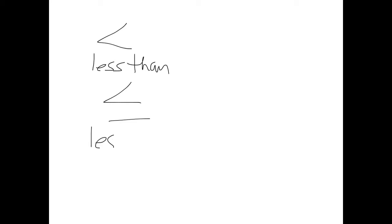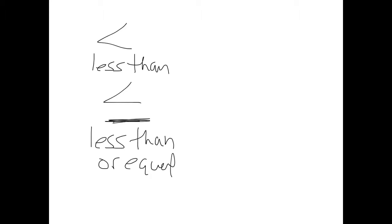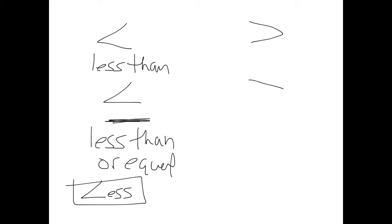Both types use the same symbols. This is less than, and this is less than or equal to — the little line under it is half of your equal sign, so that's the 'equal to' part. To help remember which is which, if you look at the less than symbol, it kind of looks like an L — so that is less than. The other two go the other direction: this is greater than.